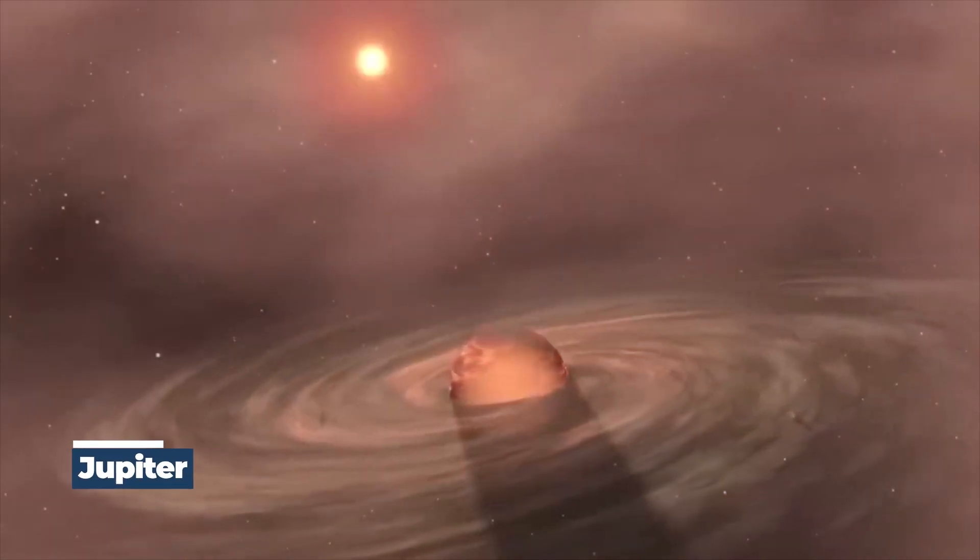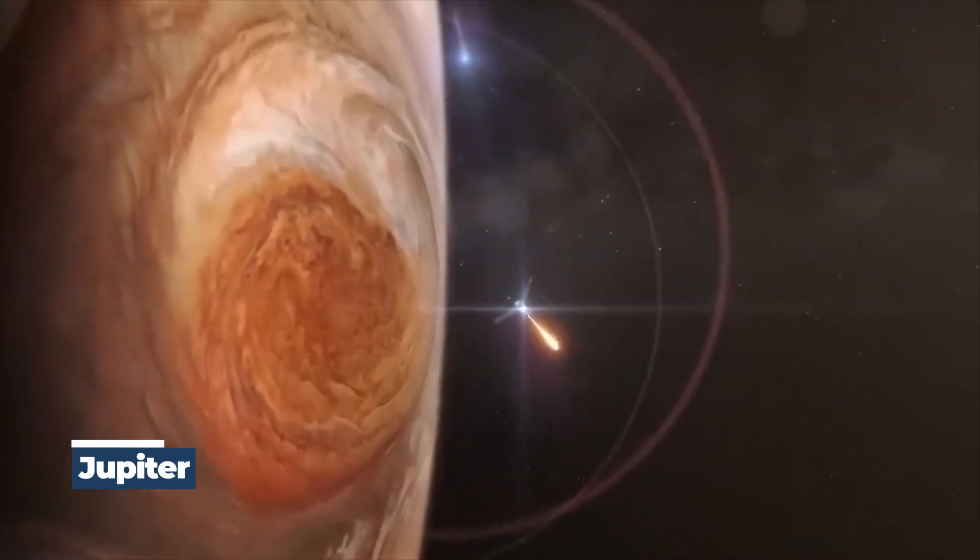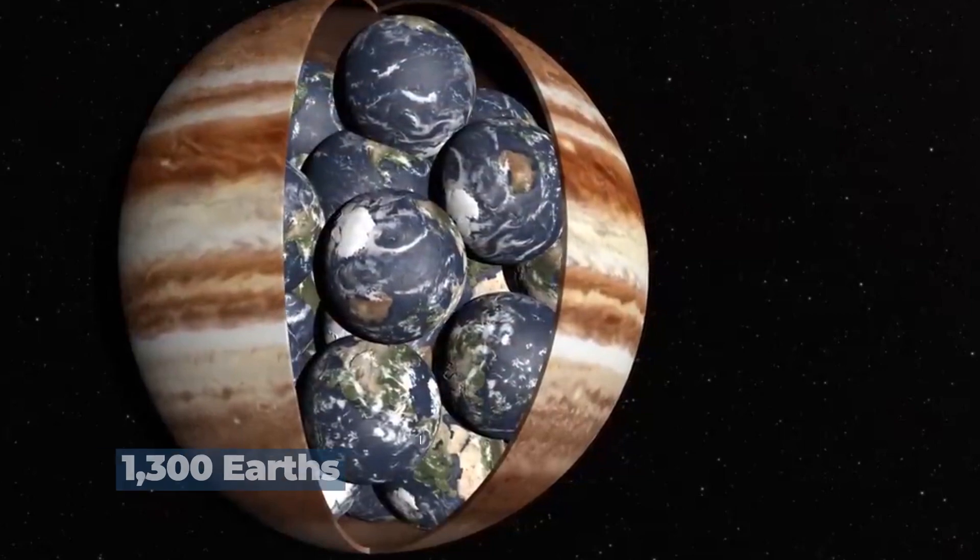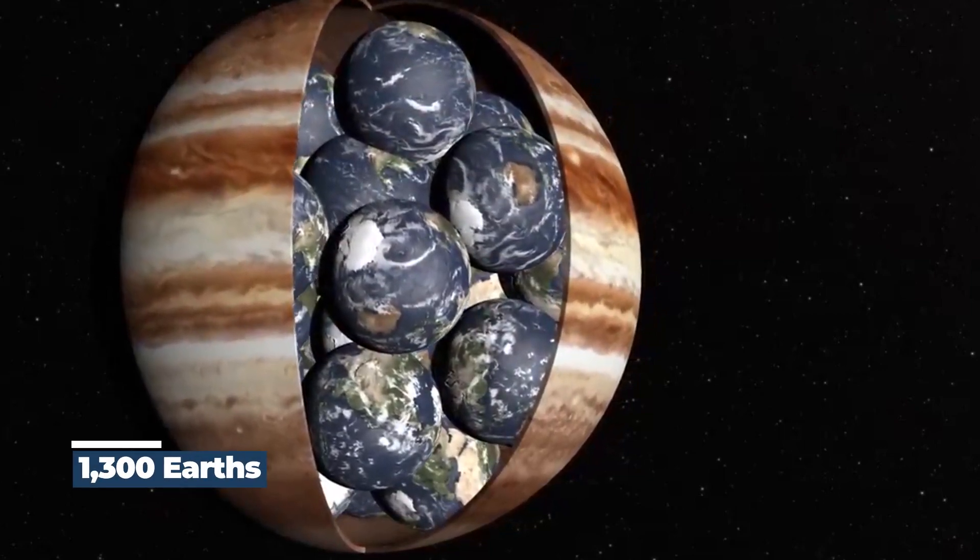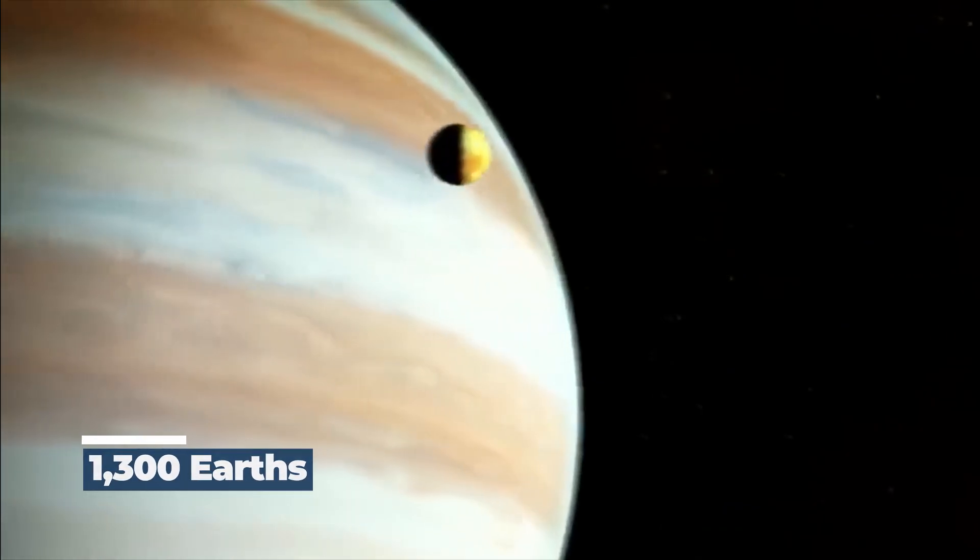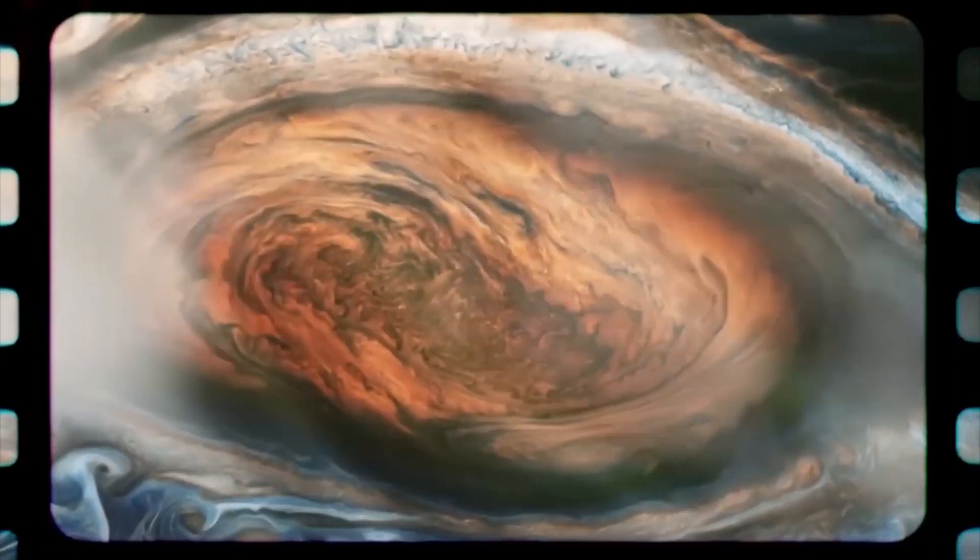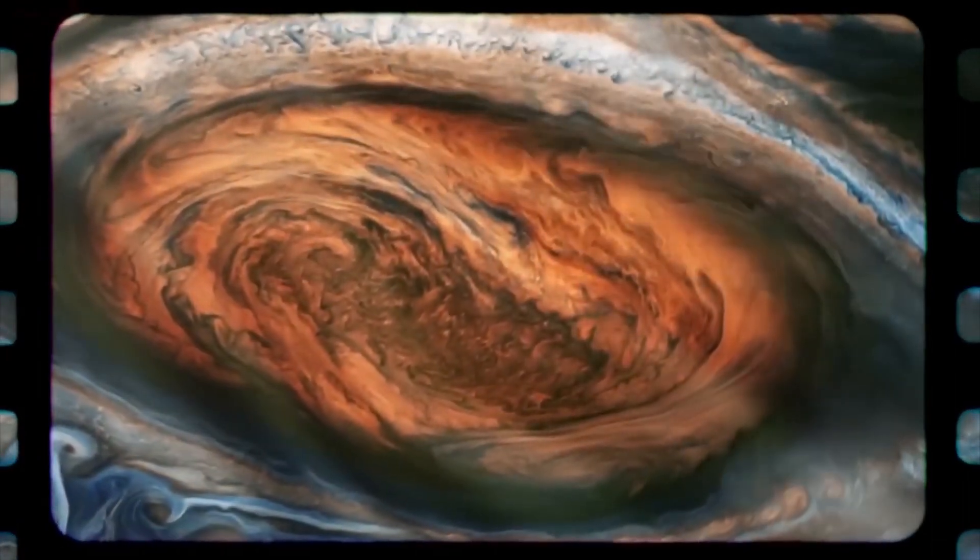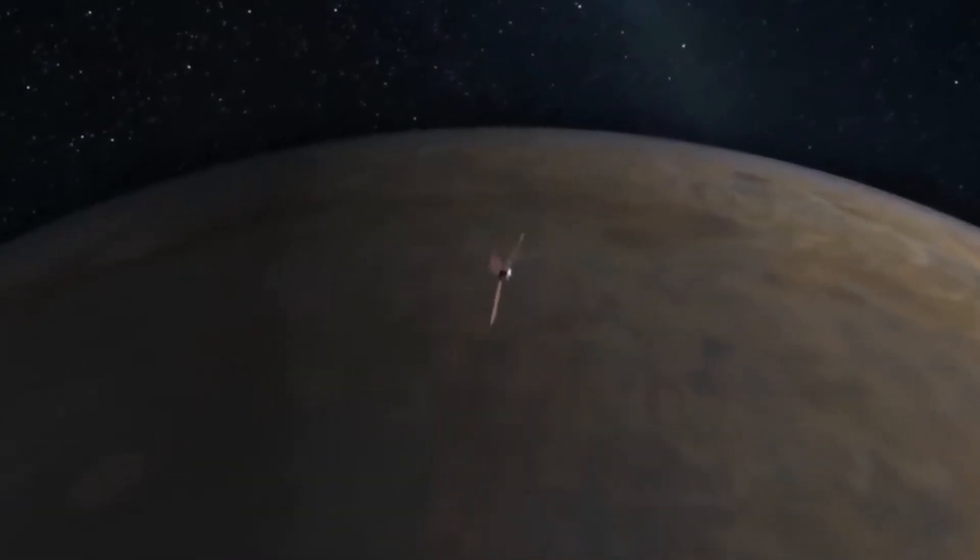Jupiter is one of the brightest celestial objects and is equivalent to the size of almost 1,300 Earths. Over the past few decades, the mesmerizing storms that swirl across Jupiter's upper layers of sky have been revealed by telescopes and visiting spacecraft.